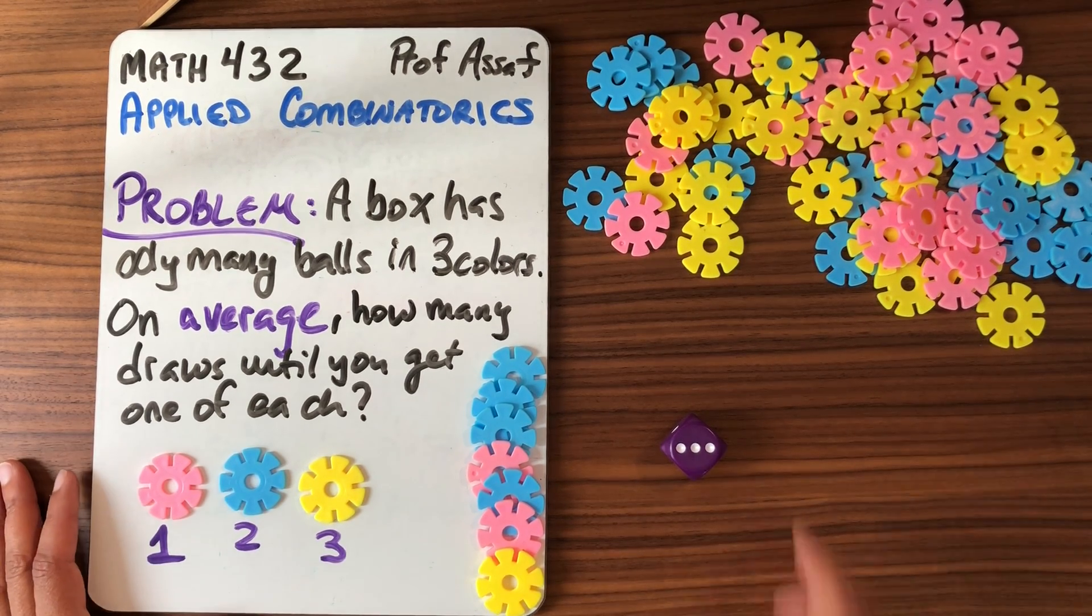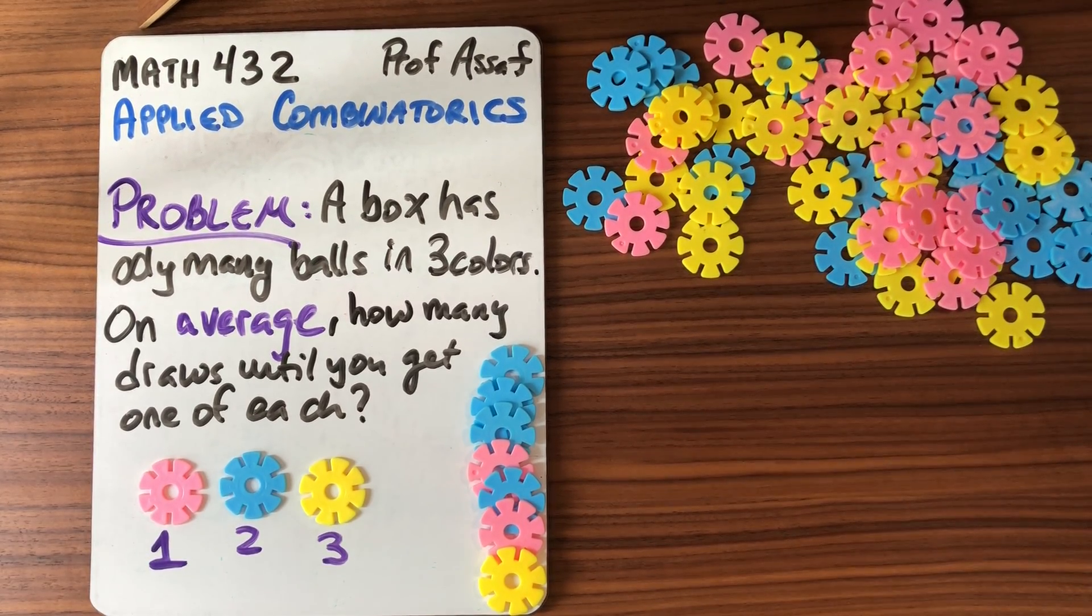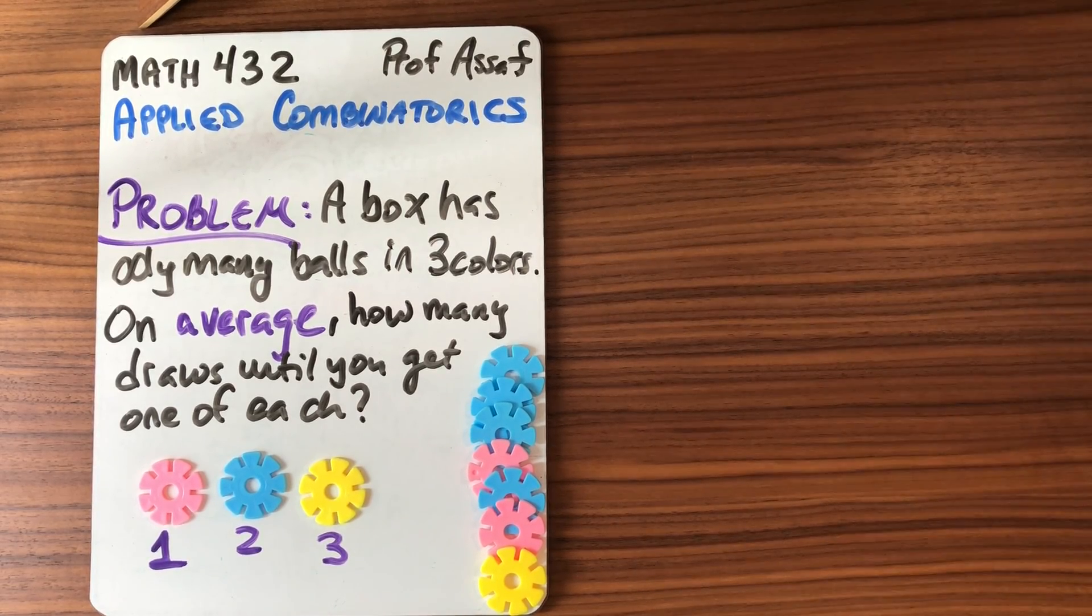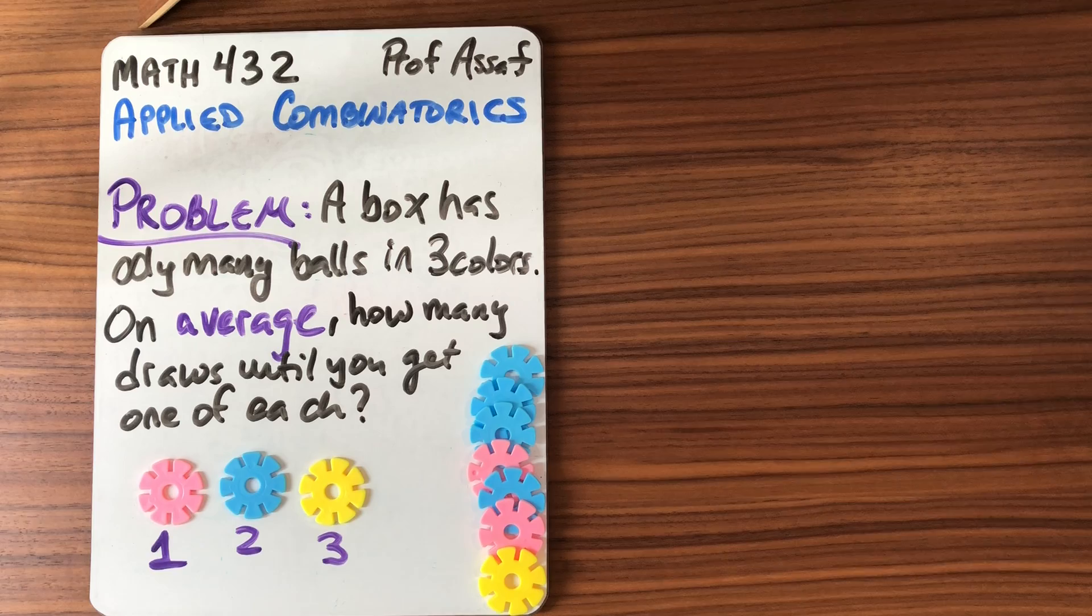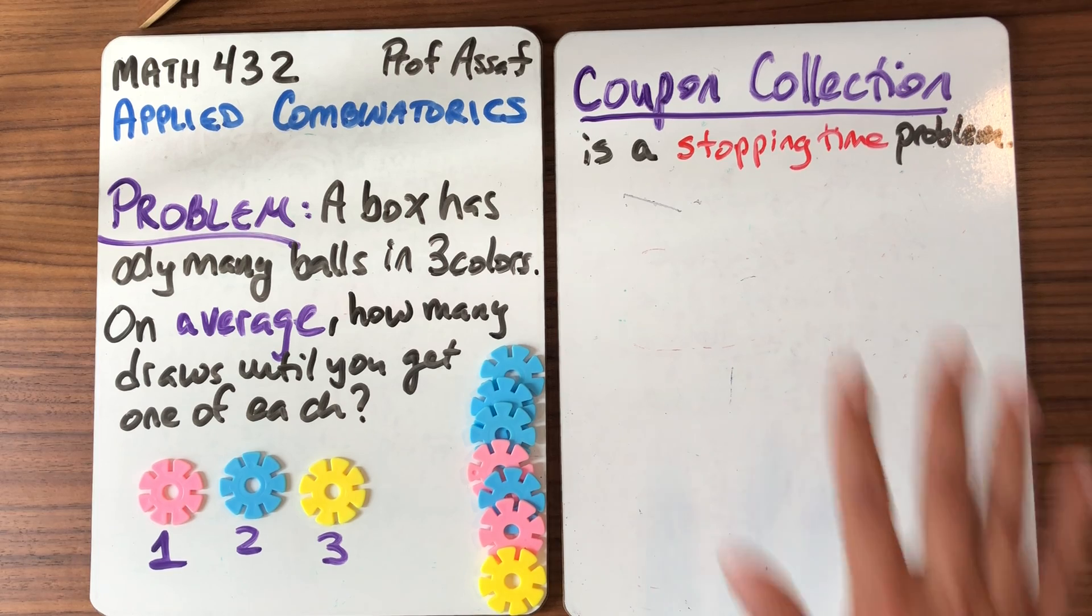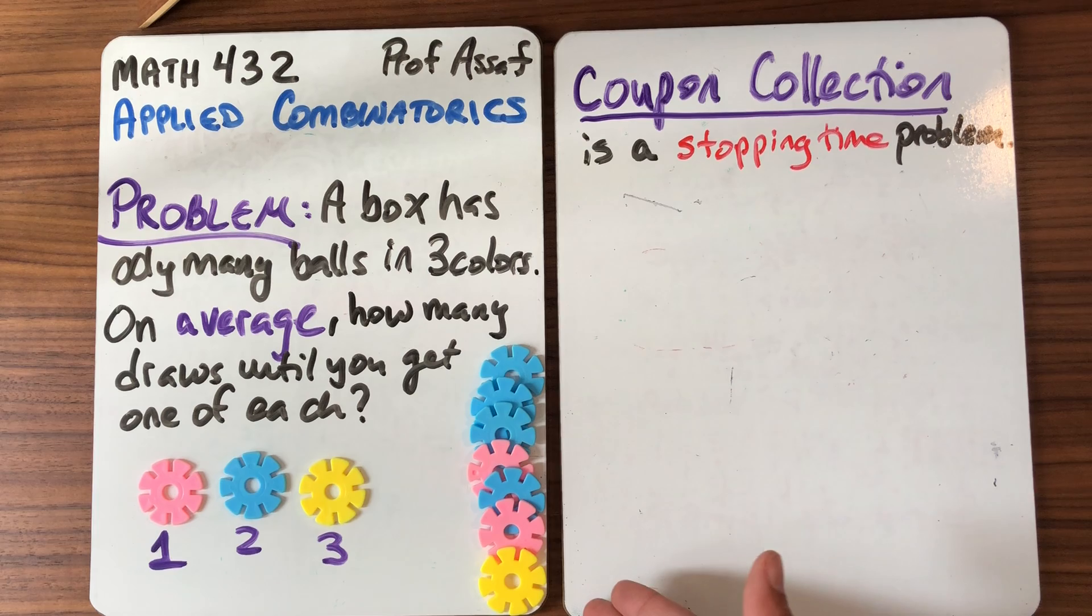That's the coupon collection problem. I want to know how many. In this particular instance, it took me seven draws until I got what I was looking for, and in general we can ask, well how many does it normally take? How many do we expect it's gonna take? So this is a question of expected value, and that's gonna be a topic in probability. The coupon collection problem is a stopping time problem. It's similar to the birthday problem, except now I want to keep going until I get a set, and that's giving me a stopping condition.